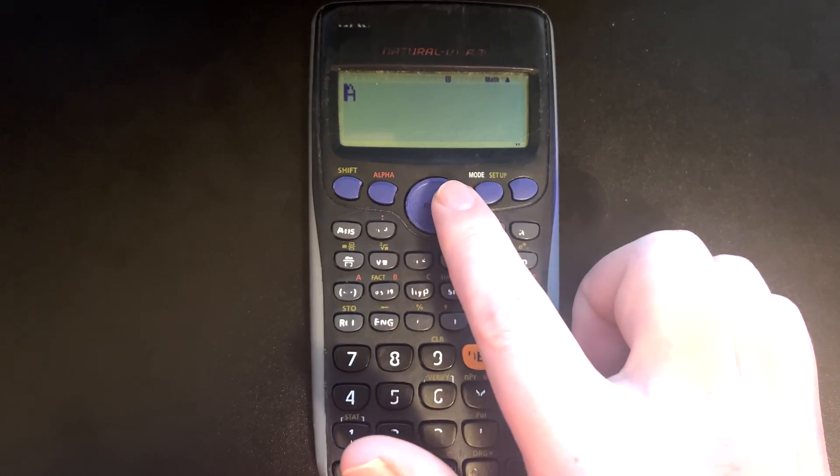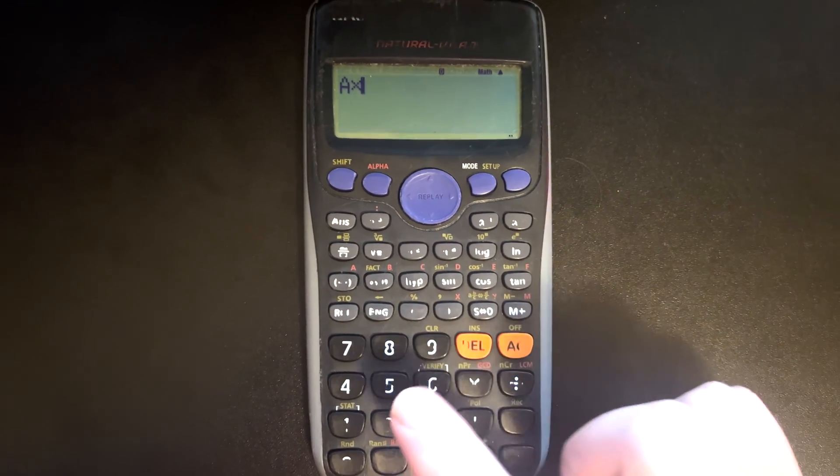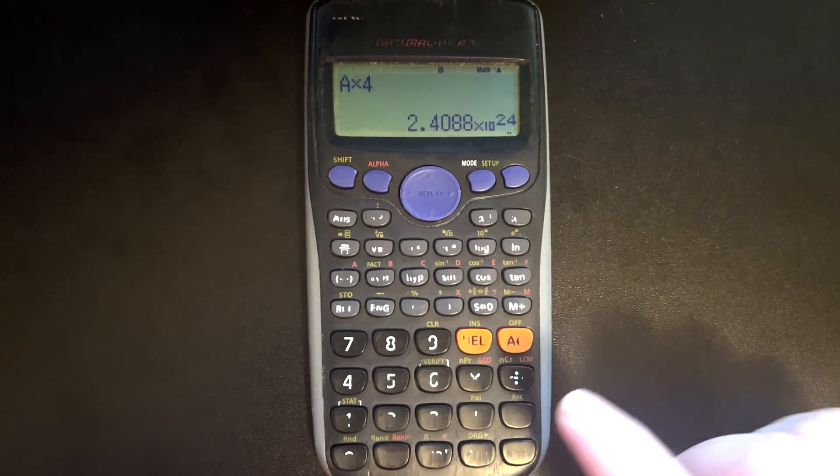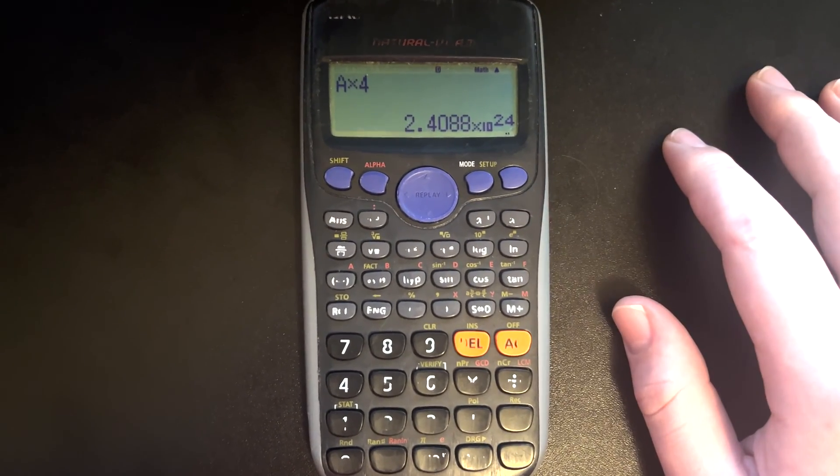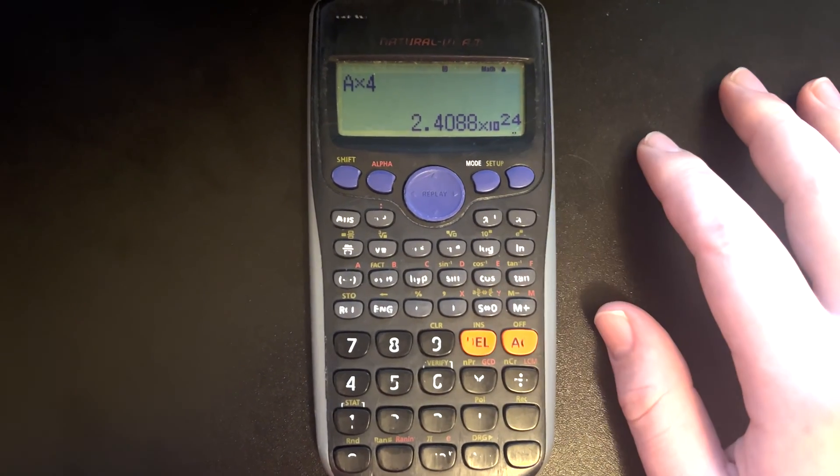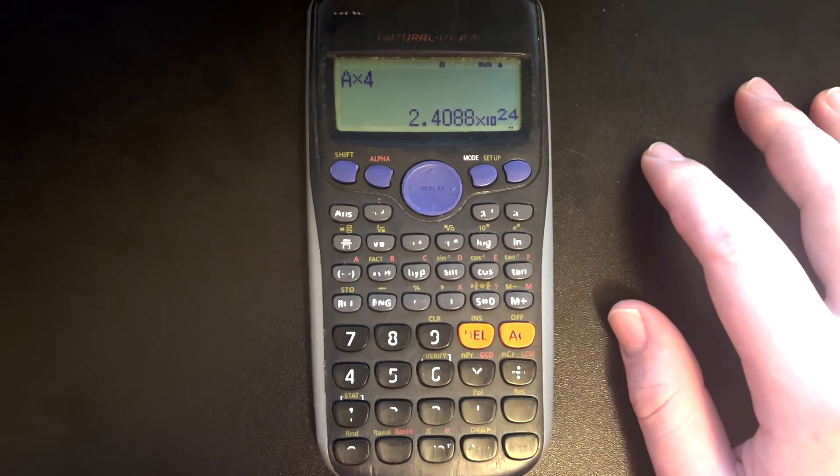Now I can also operate on that as if it were just a normal number, so A times 4 equals, and there you go. That's how you can store a number in your calculator and recall it for later use.